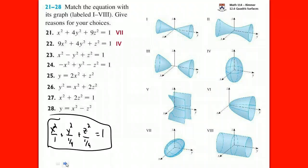Question 23: x squared minus y squared plus z squared equals 1. We recognize that all terms are squared, and there is one negative — on the y squared term. One negative means it's a hyperboloid of one sheet — the nuclear reactor shape. It's going to be opening in y. The variable with the minus sign is the axis of symmetry. So it's Roman numeral II.